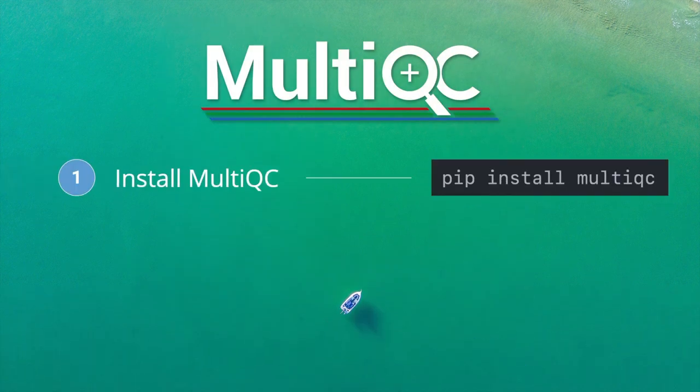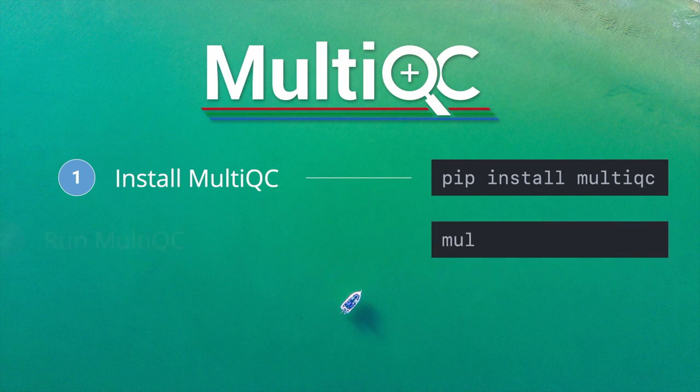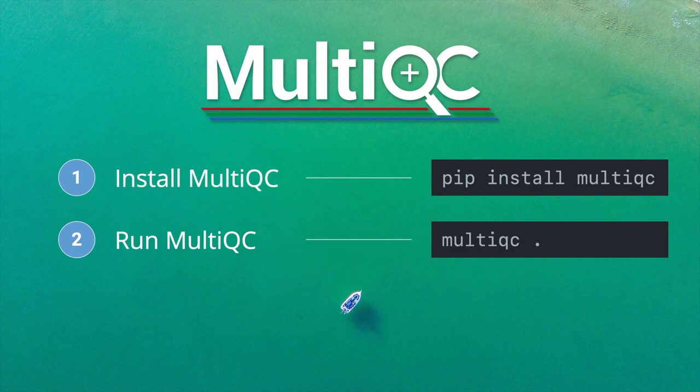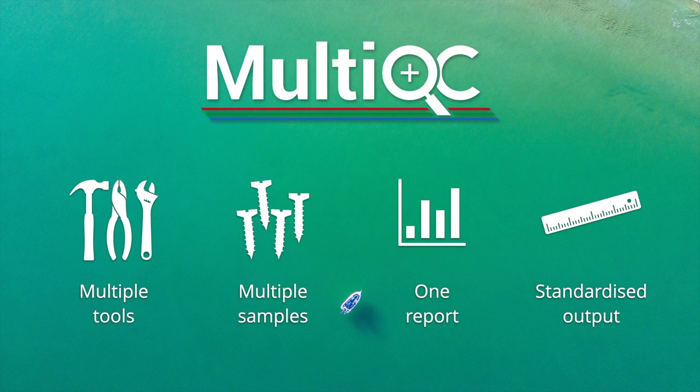MultiQC is a Python package. You can install it using pip and run it on the command line, just supplying a directory with the finished analysis for your bioinformatics run. MultiQC generates a report which you can then look over. It supports multiple different bioinformatics tools and can handle a lot of samples in a single report. It also gives standardised output in addition to the HTML, such as CSV, JSON, or YAML, which can be useful for downstream analysis.